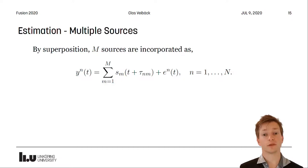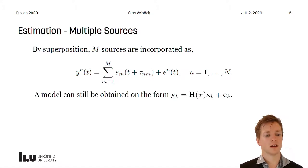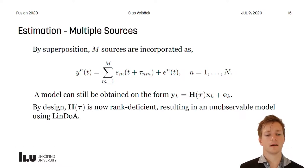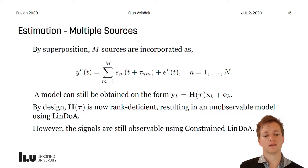We also consider the multiple sources and we do this by superpositioning them in the signal model. On this form we can still obtain a model on the same form as before. By design, however, H(τ) is now rank deficient, which results in an unobservable model for linearized direction of arrival. Adding the constraints, however, allows us to regain the observability of the model.